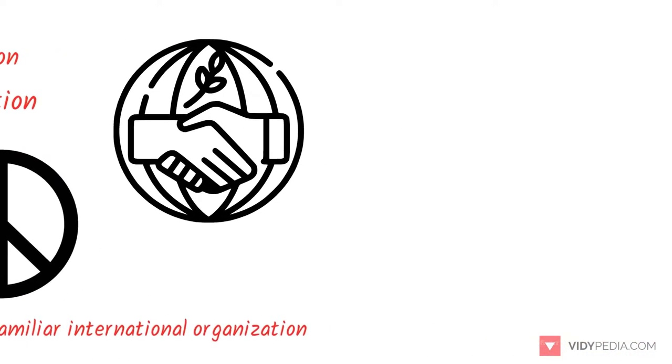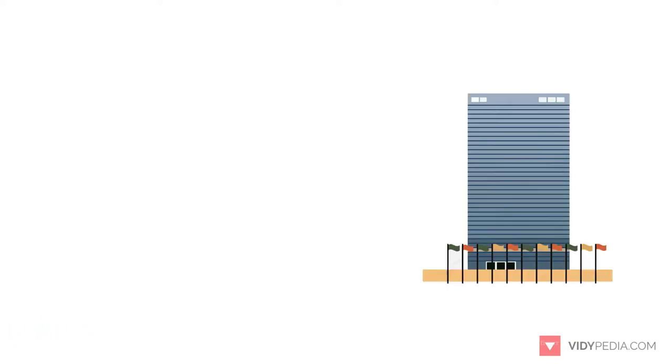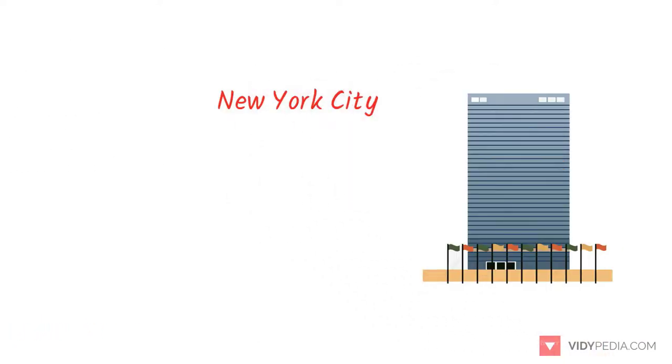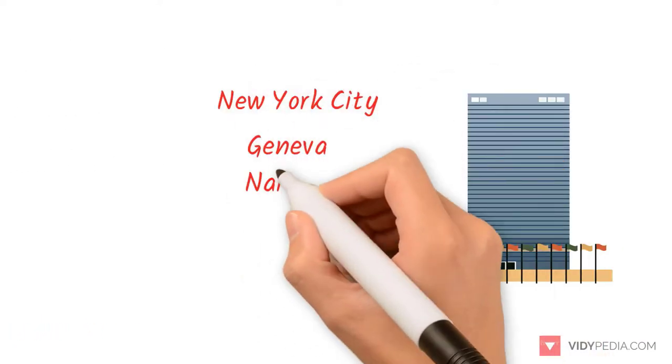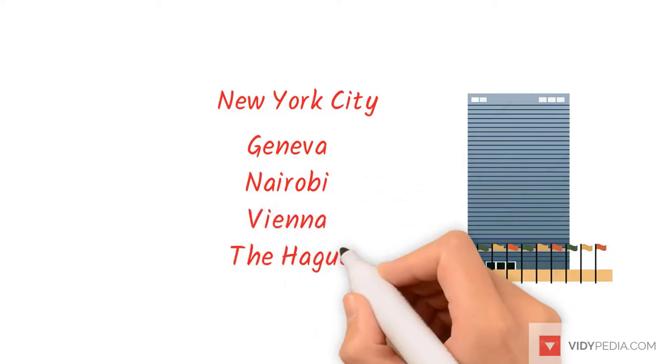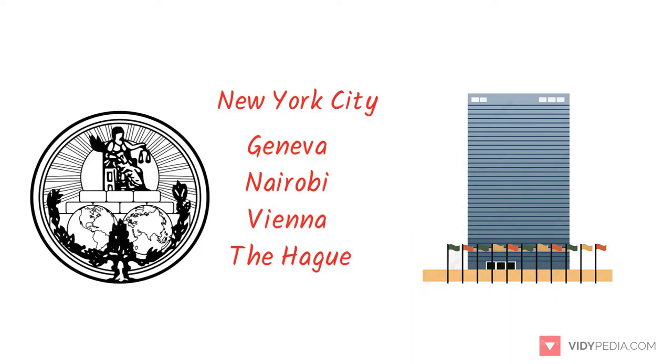The UN is headquartered on international territory in New York City and has other main offices in Geneva, Nairobi, Vienna, and The Hague, home to the International Court of Justice.